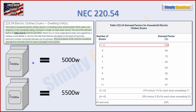When you're dealing with just one dryer, you don't have to use the chart at all. In fact, for the first four dryers you don't need it because they have a 100% demand factor. Table 220.54 gives you the number of dryers on the left and the corresponding demand factor on the right. For one through four dryers, they're 100%, so there's no deduction to be made.